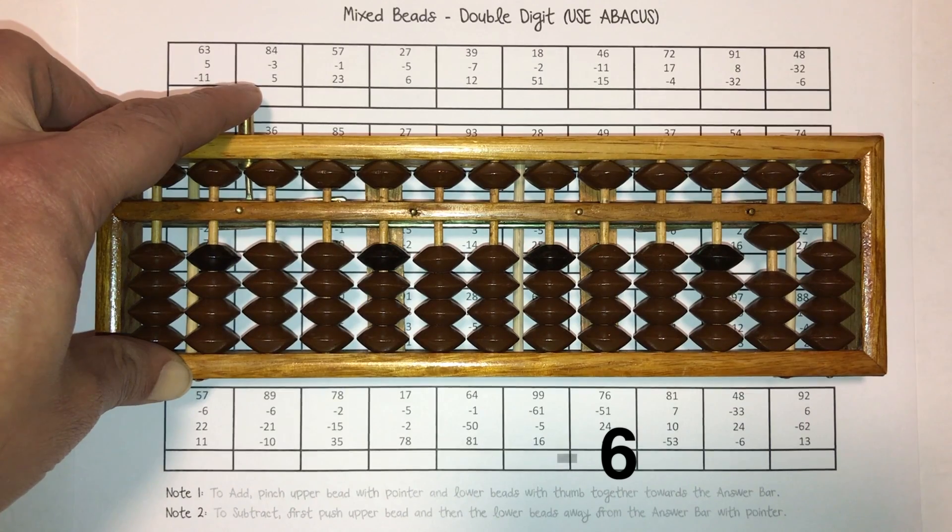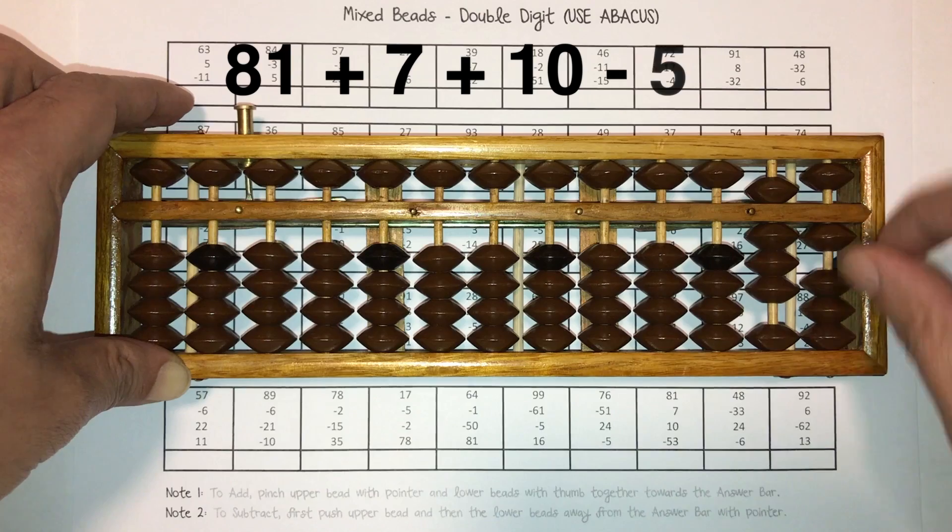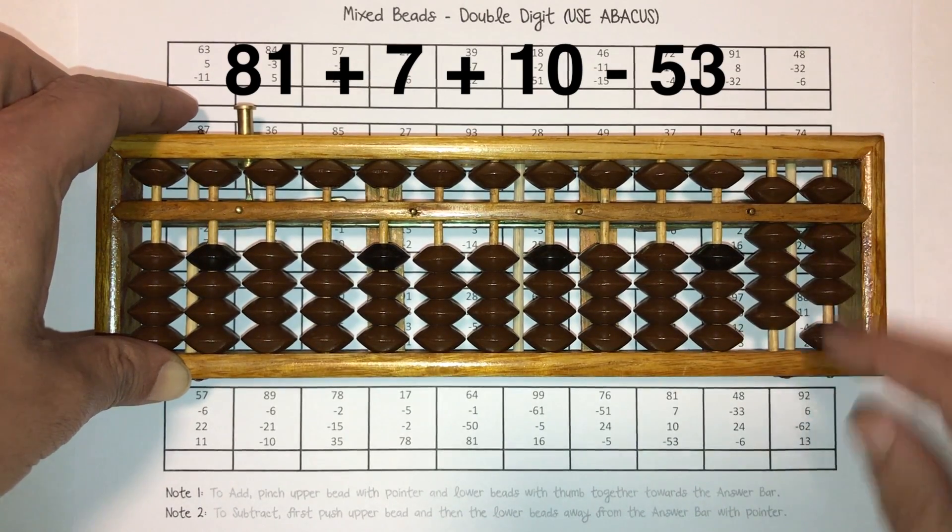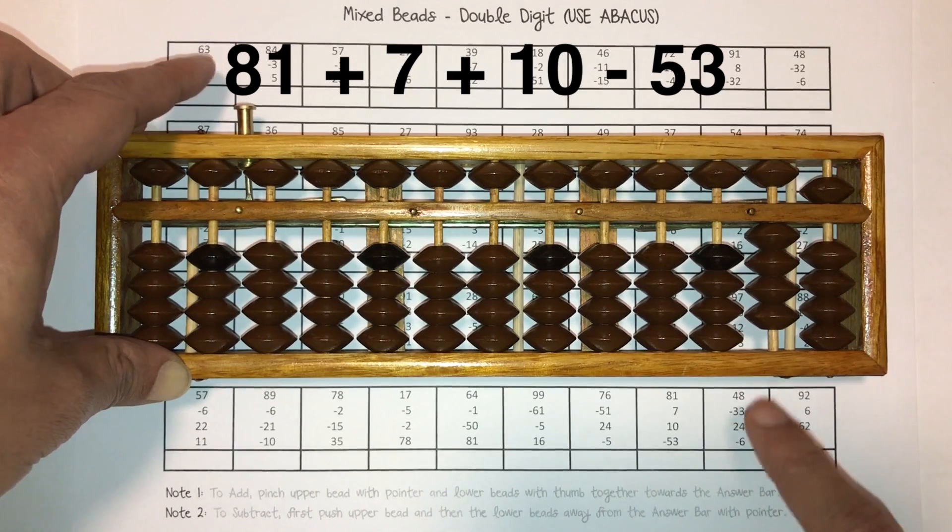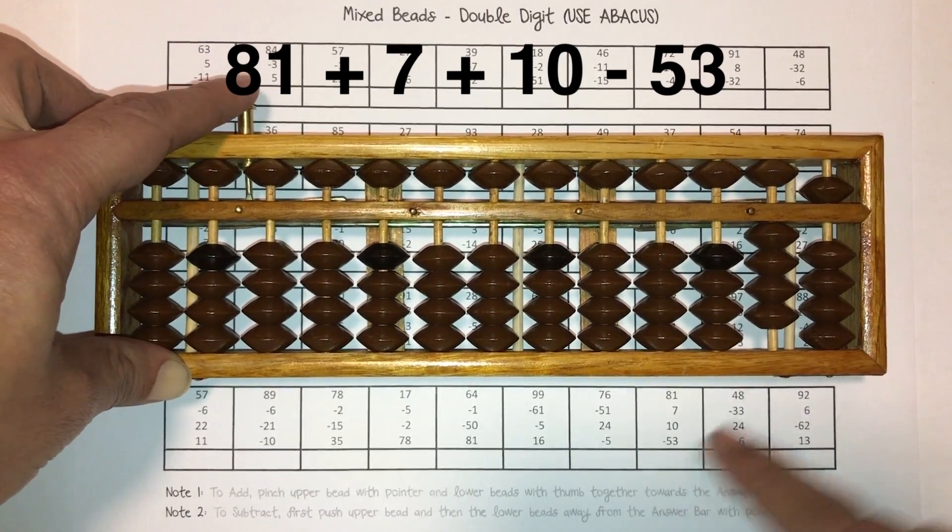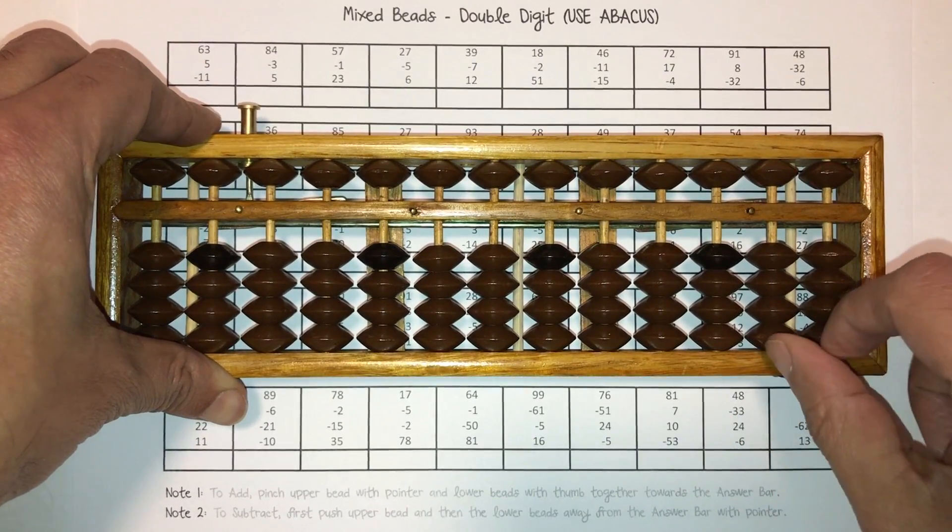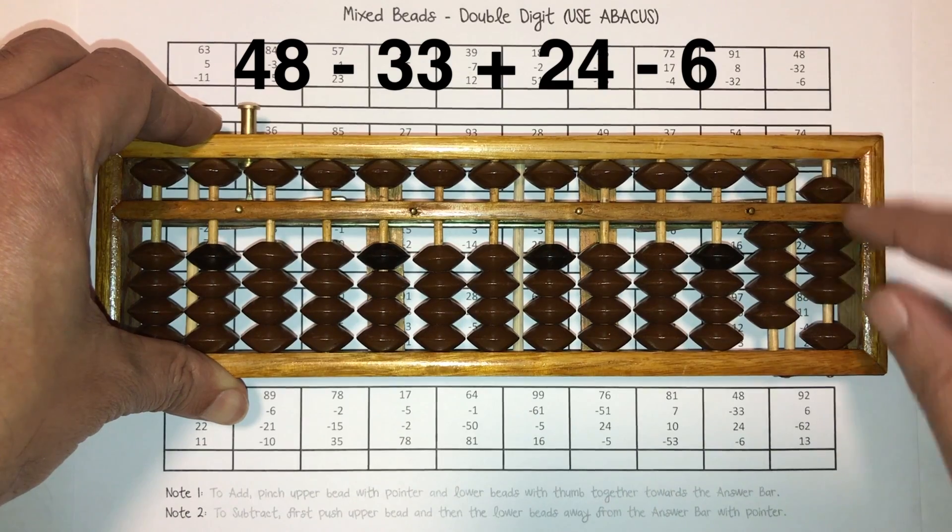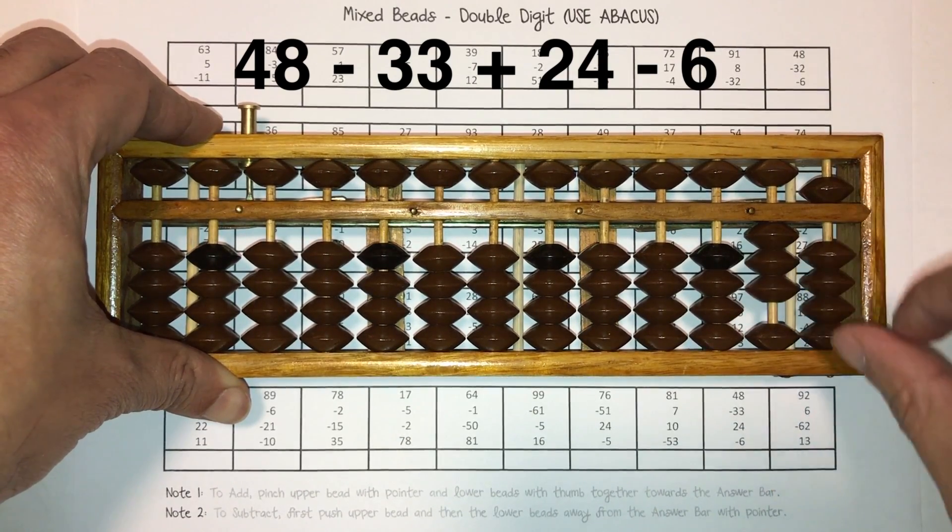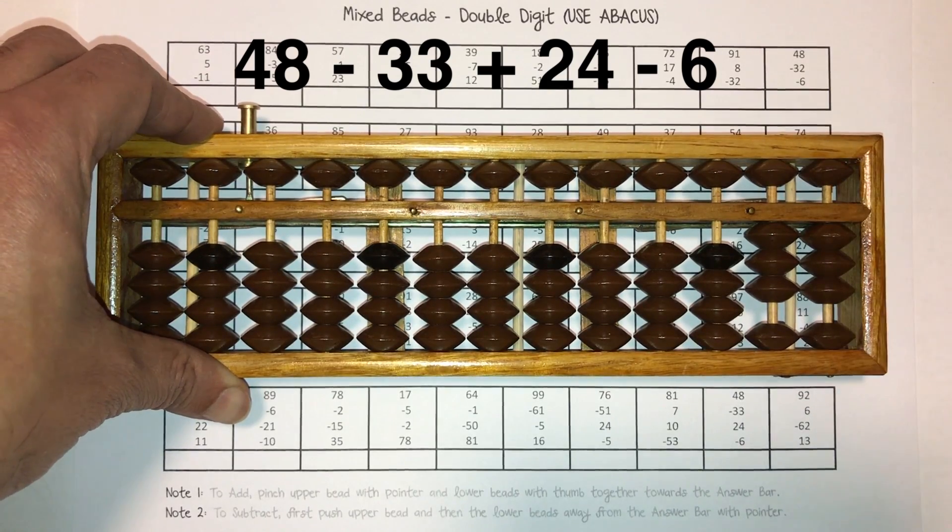All right, let's do the last three here. 81, 81 plus seven plus 10 minus 53. Answer is 45. 45 goes right there. All right, clear. Let's do that. 48 minus 33, 93 plus 24 minus six. Answer is 33. 33 goes right there.